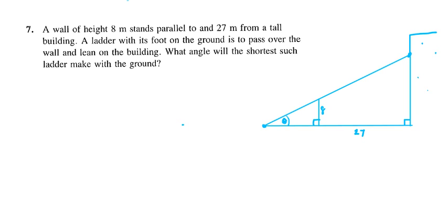The tricky part is, to make this most straightforward, you want to draw another line parallel to the ground that is also 27 meters — the same distance from the wall to the building. Why is this helpful? Because we're working with similar triangles. This angle is theta as well, and it's the exact same as this angle theta down at the ground — these two are exactly the same.